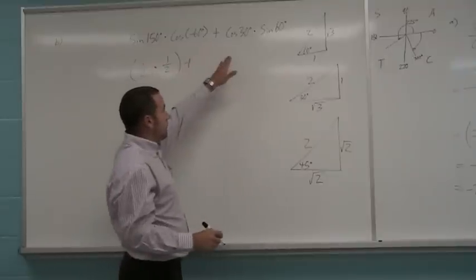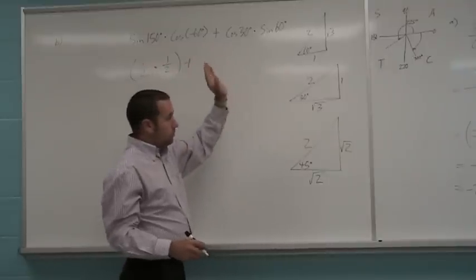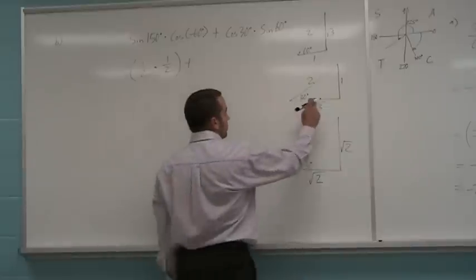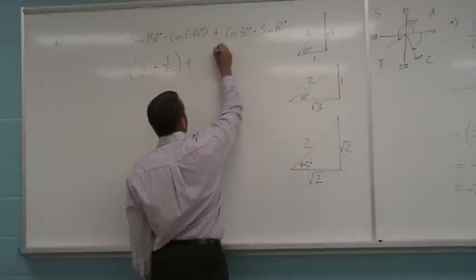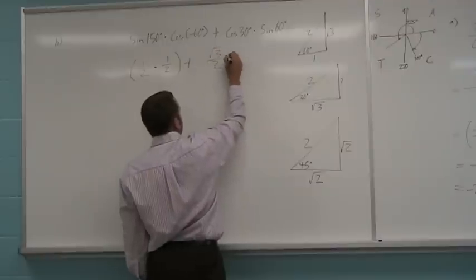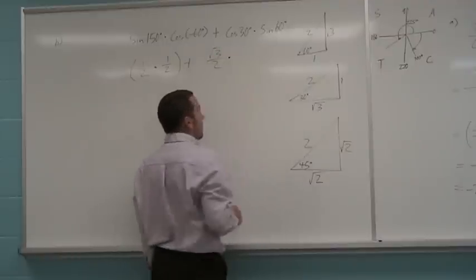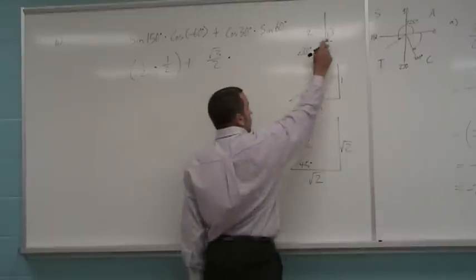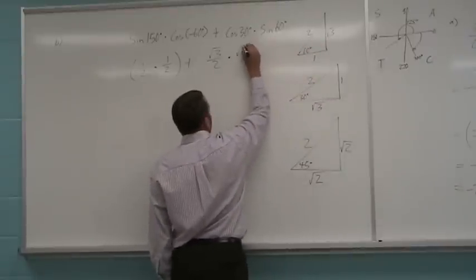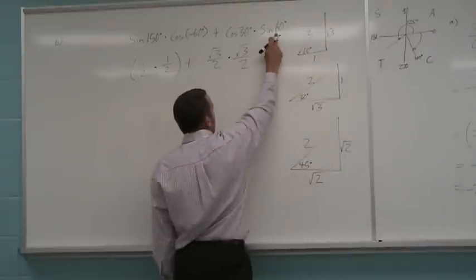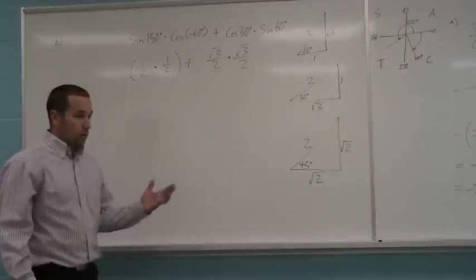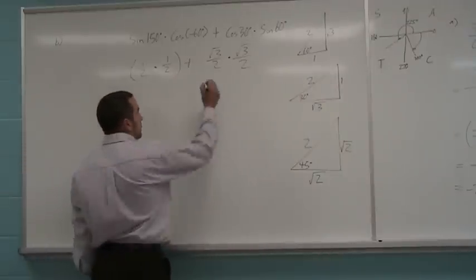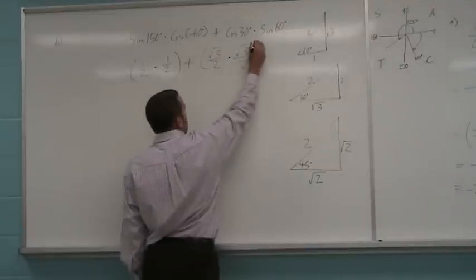Plus cos of 30 degrees. You should be able to just go right to your special angles. Cos of 30 degrees is square root of 3 over 2. Multiply by the sine of 60 degrees. Sine of 60 degrees, square root of 3 over 2. First quadrant again. So everything's positive in the first quadrant. The sine stays as positive.